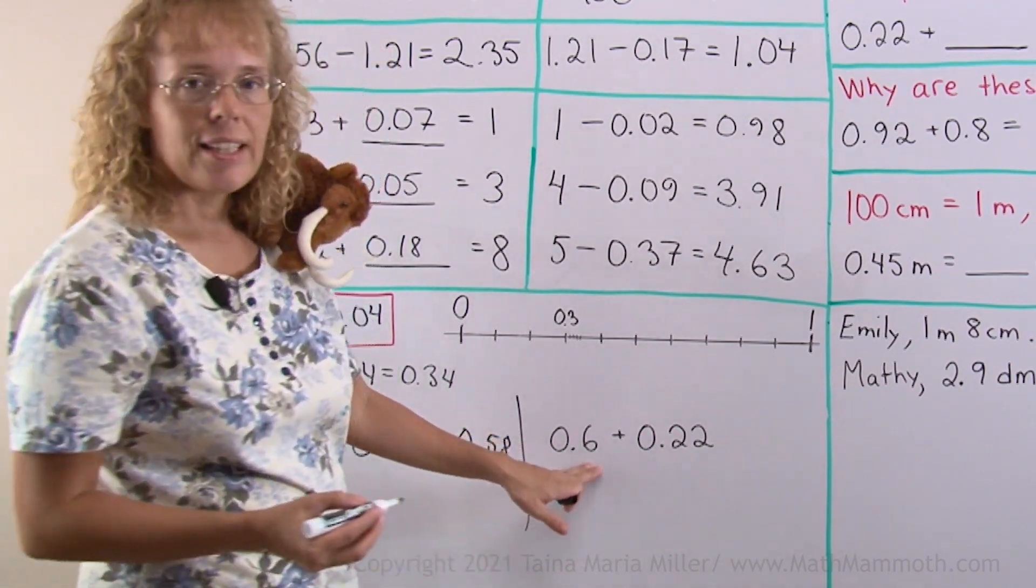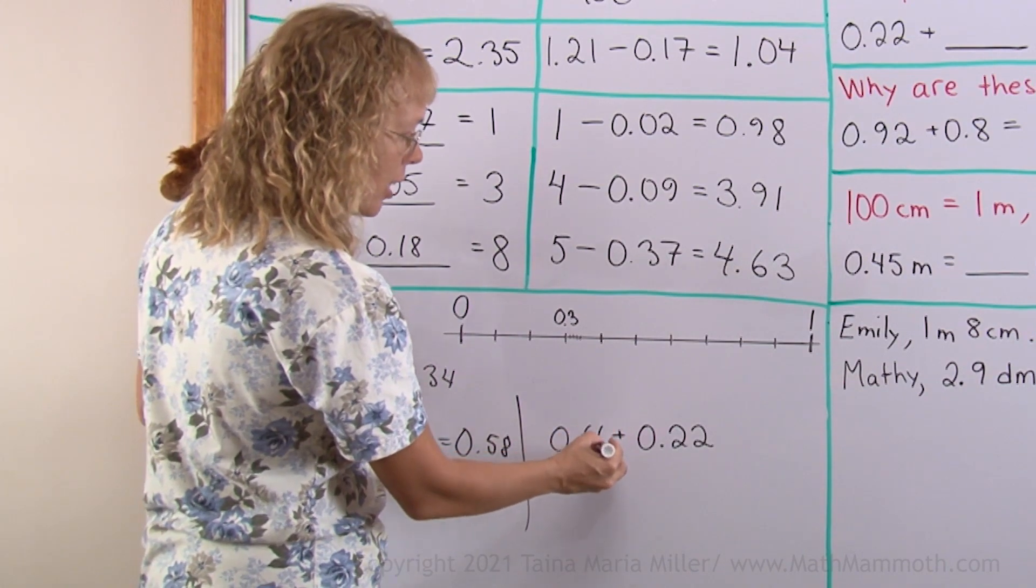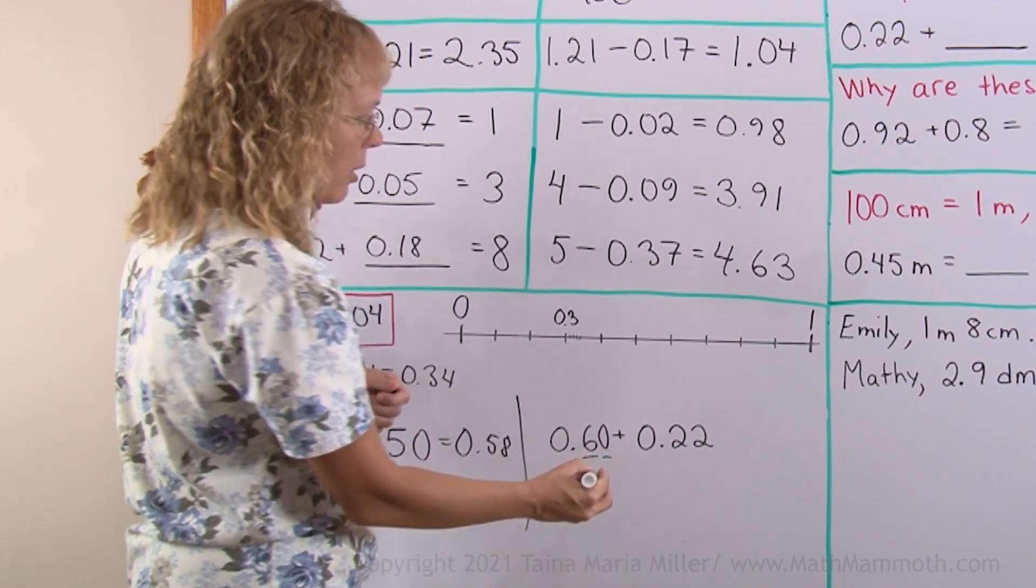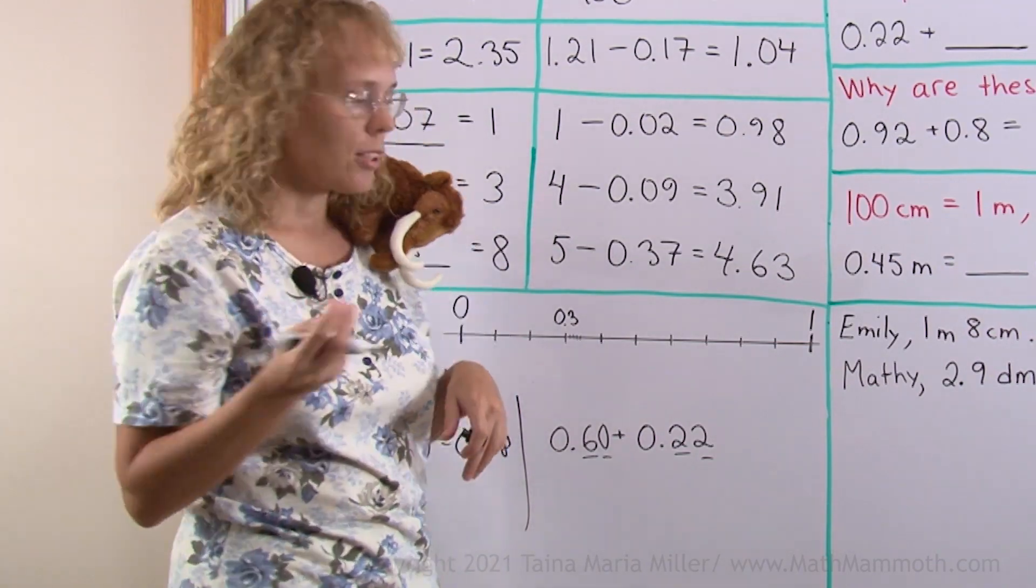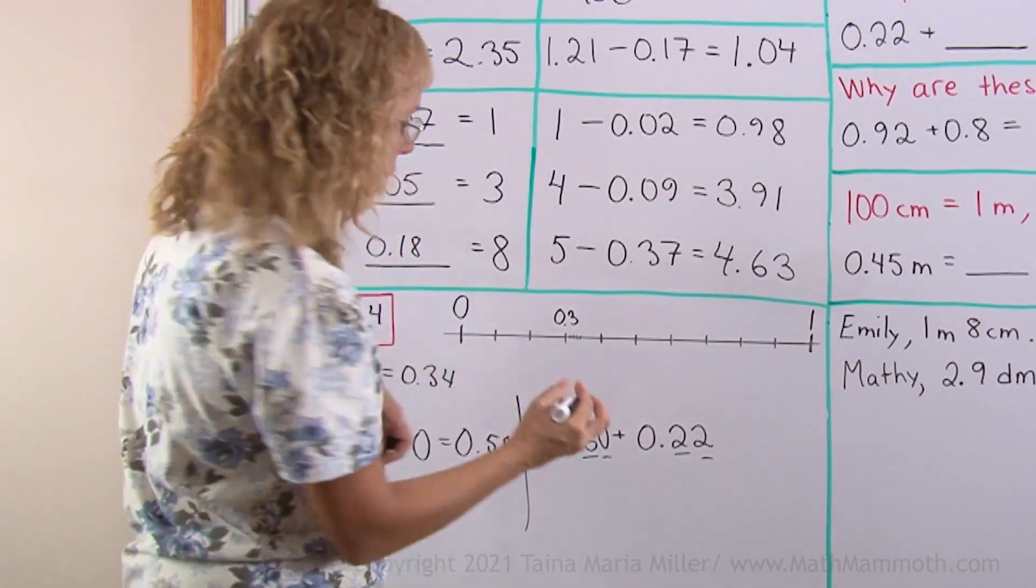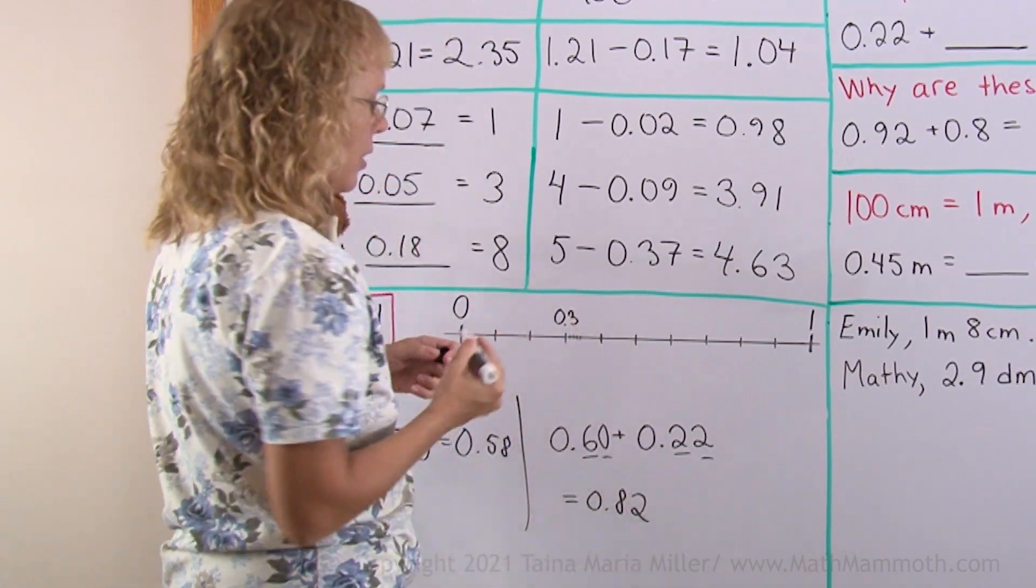Or here, 6 tenths and 22 hundredths. Before you add, you can tag a 0 here, so that you have 2 decimal digits here and 2 here. And now you can just think of the hundredths, 60 plus 22 is 82, 82 hundredths, okay.